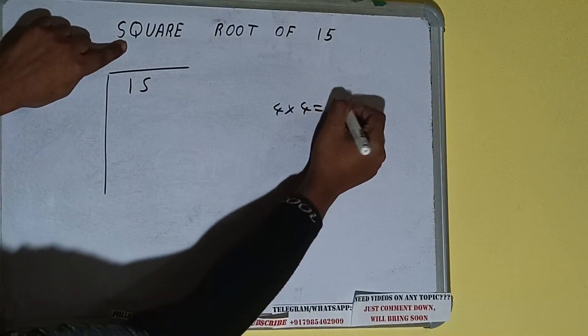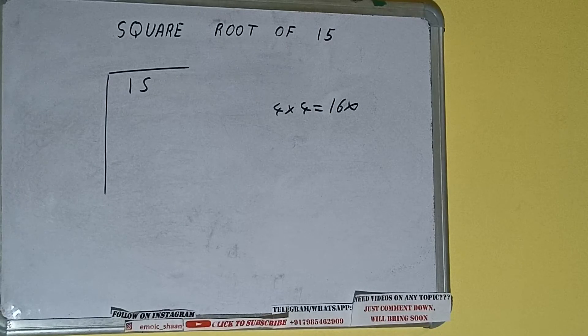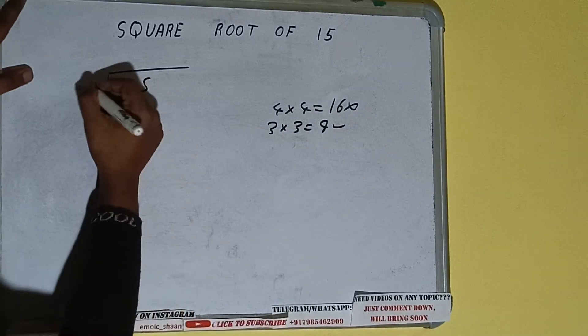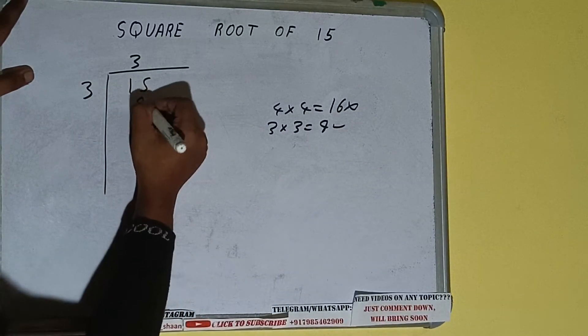So if we write 4 here and 4 here, it will be 16, which is greater than 15, so we cannot take it. If we write 3 here and 3 here, it will be 9, which is good to take. So 3 here and 3 here. 9 subtract, 6 will be left.